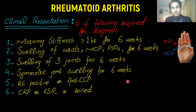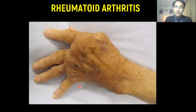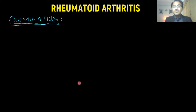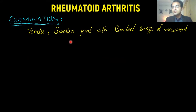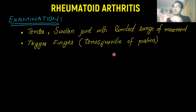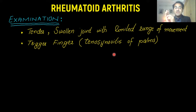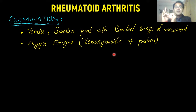This is a picture of a patient who has rheumatoid arthritis — look at the deformities and the destruction of the joint. On examination, you will see tender, swollen joints with limited range of movement due to inflammation. You may also be able to appreciate trigger finger, which occurs due to tenosynovitis of the palms. Tenosynovitis is inflammation of the tendons; whenever there is tendon inflammation, the attached muscles contract, causing a finger that is bent and cannot be pushed back. That is called trigger finger.